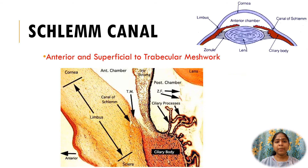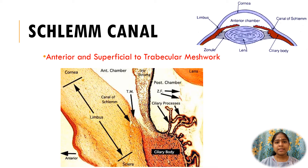The canal of Schlemm is present anterior and superficial to the trabecular meshwork. It is an endothelial-lined venous canal that completely encircles the limbus. The canal is separated from the trabecular meshwork by thin connective tissue and separate endothelial linings.